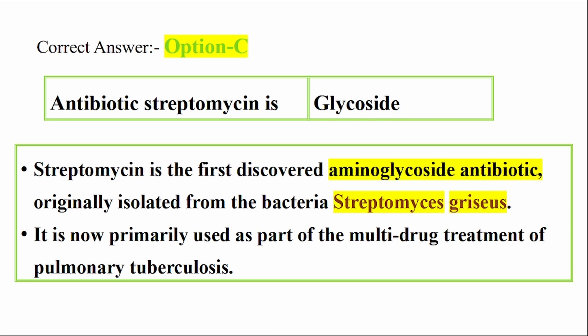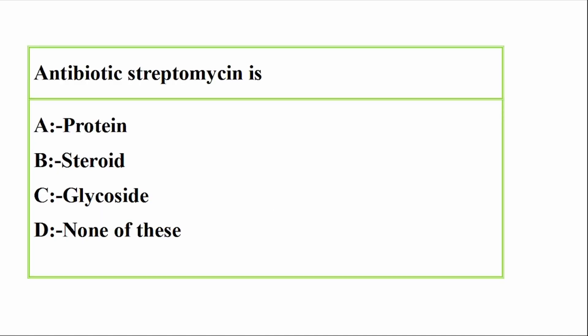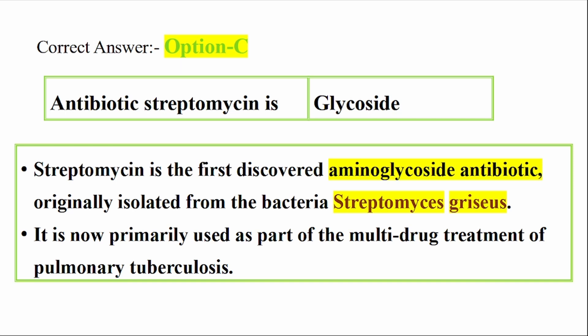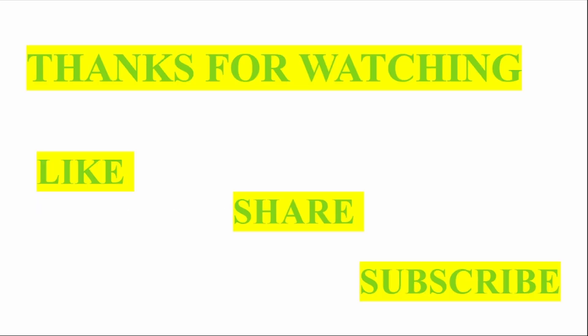Streptomycin is the first discovered amino glycoside antibiotic, originally isolated from the bacteria Streptomyces griseus. It is now primarily used as part of the multi-drug treatment of pulmonary tuberculosis. Antibiotic streptomycin is a glycoside and is the first discovered amino glycoside antibiotic.